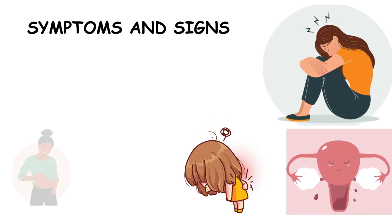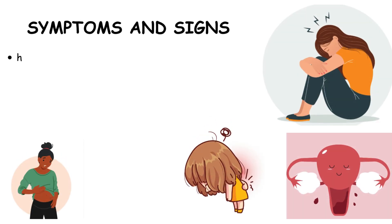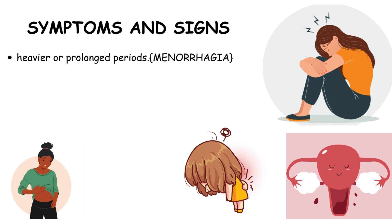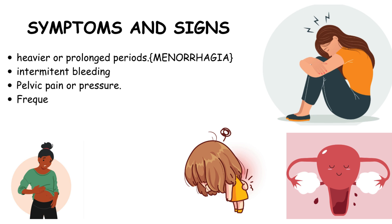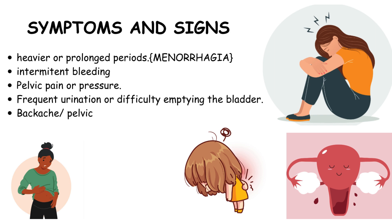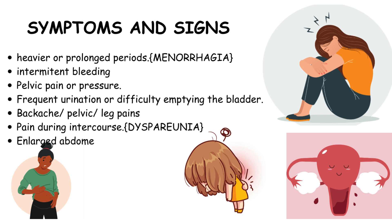Let's talk about symptoms and signs of uterine fibroids. These include heavier or prolonged periods, intermittent bleeding, pelvic pain or pressure, frequent urination or difficulty emptying the bladder, backache or pelvic or leg pains, pain during intercourse, enlarged abdomen or uterus, and subfertility or recurrent miscarriages.